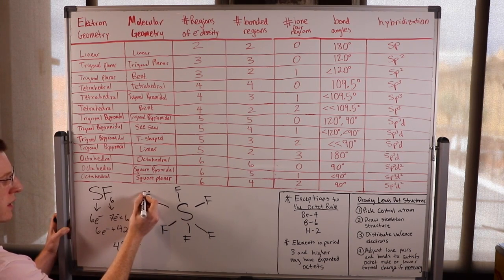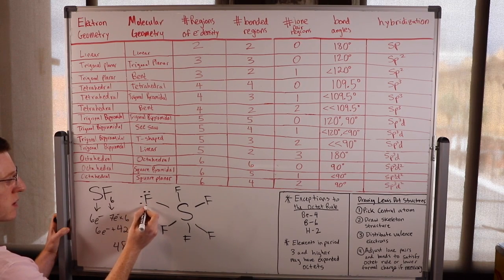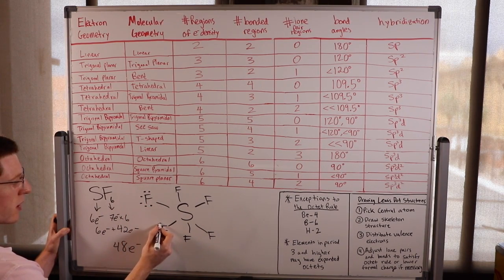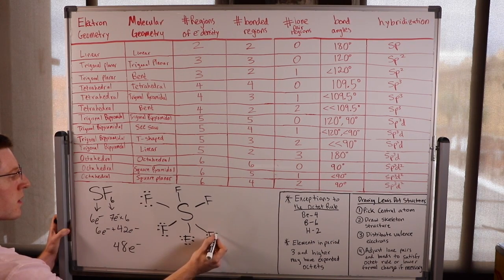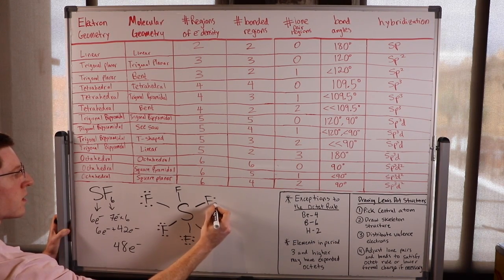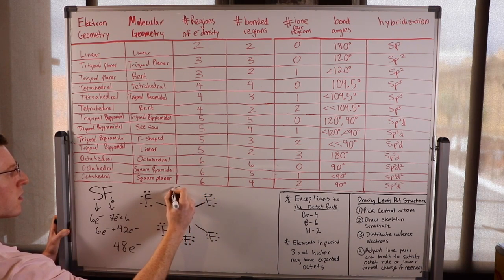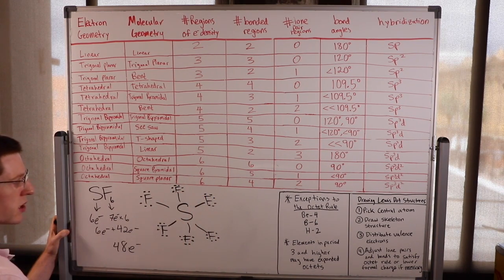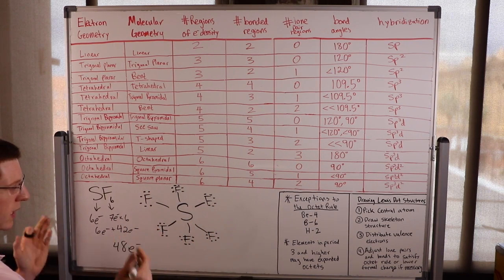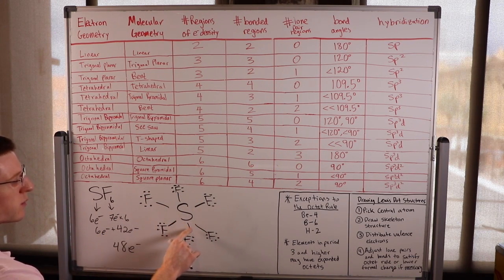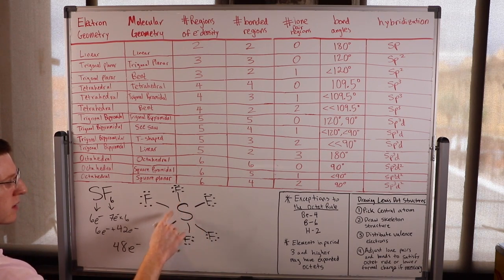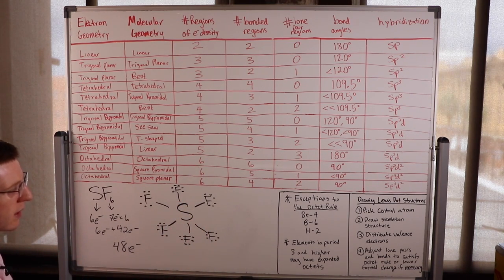Let's start satisfying the octets of the fluorines. We put six on each one — they already have two from their bond, so six more makes eight for each. Six times six fluorines uses all 36 electrons.